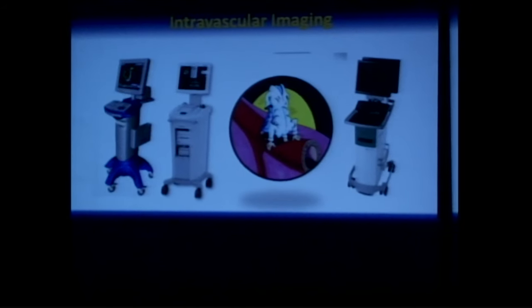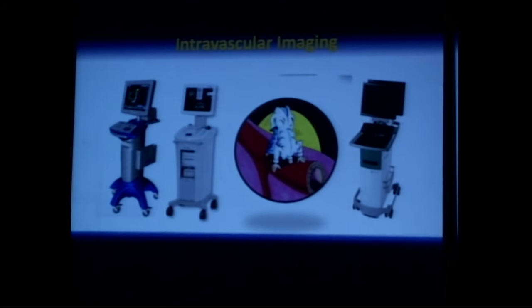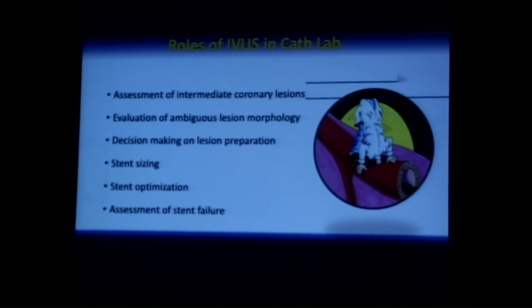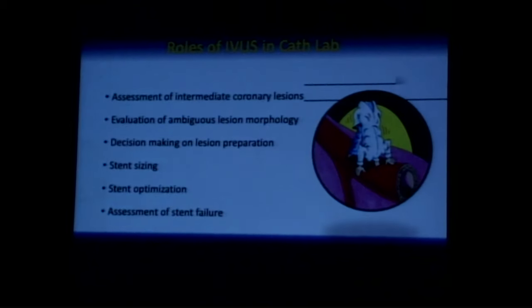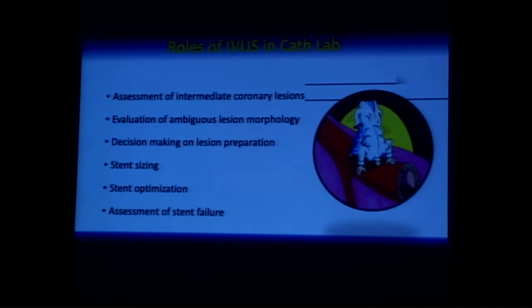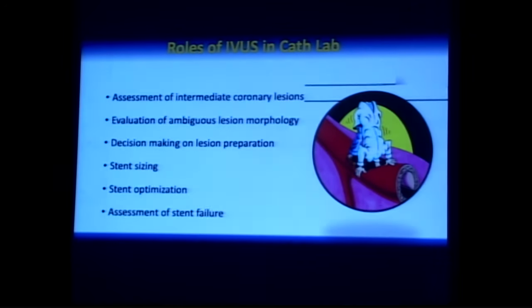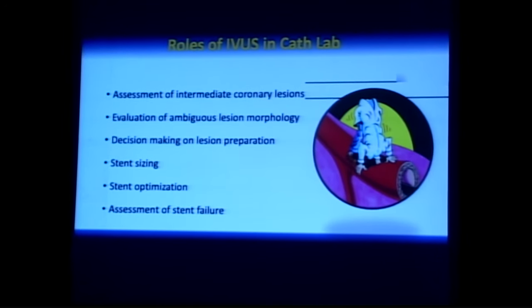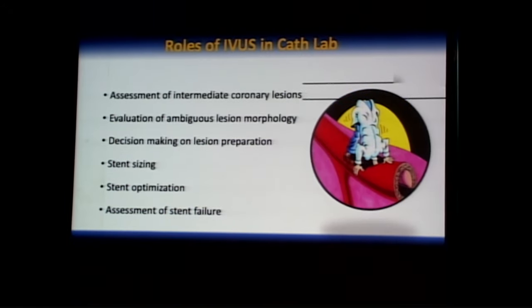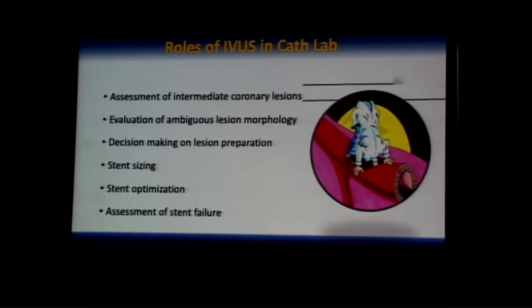Intravascular imaging, whether you use IVUS or OCT, provides additional information that supplements your angiography in improving procedural outcomes. The areas where you need this additional information are: assessment of intermediate coronary stenosis, evaluation of ambiguous lesion morphology, decision-making on lesion preparation, stent sizing, stent optimization, and evaluation of stent failure.